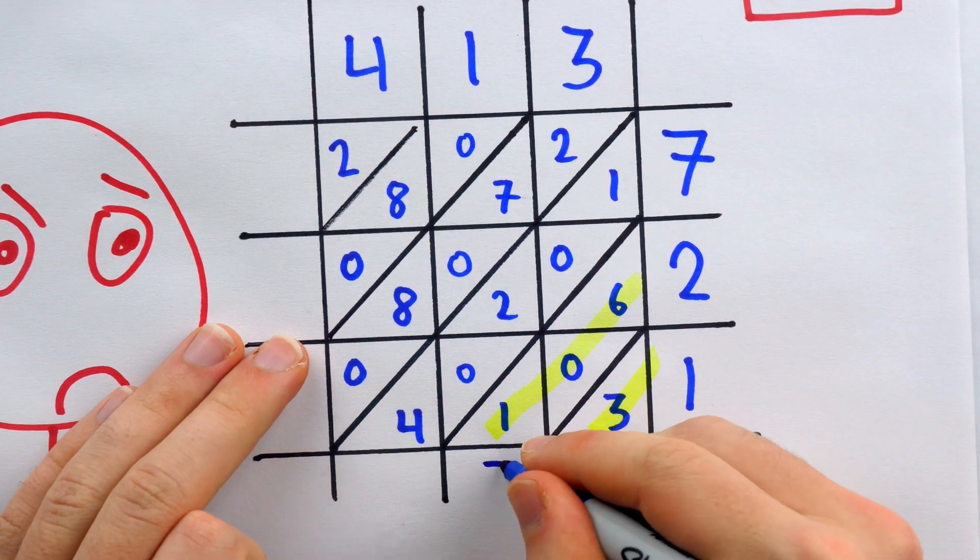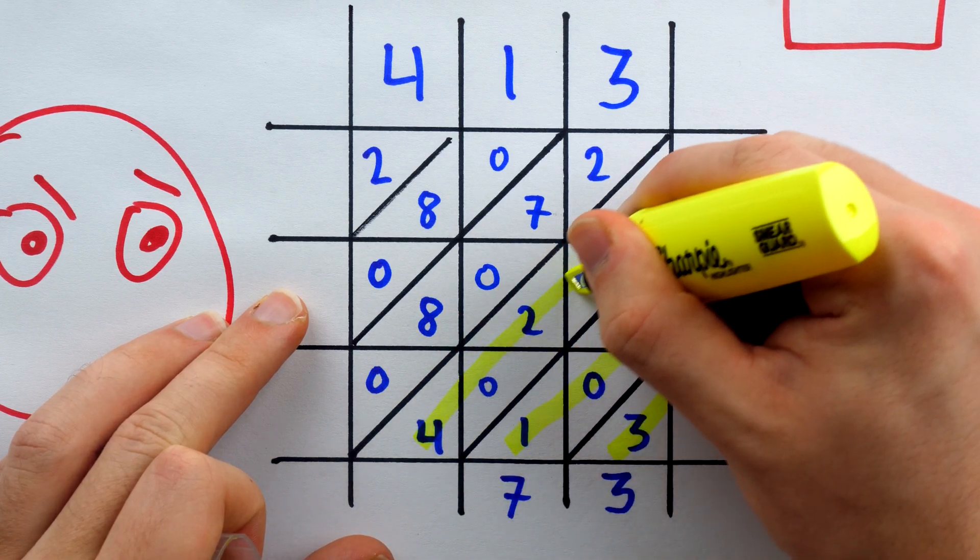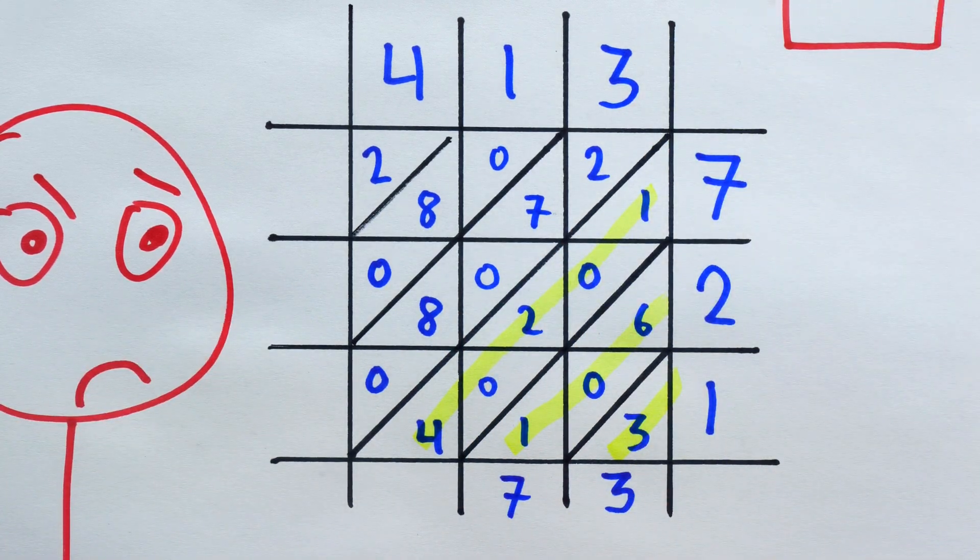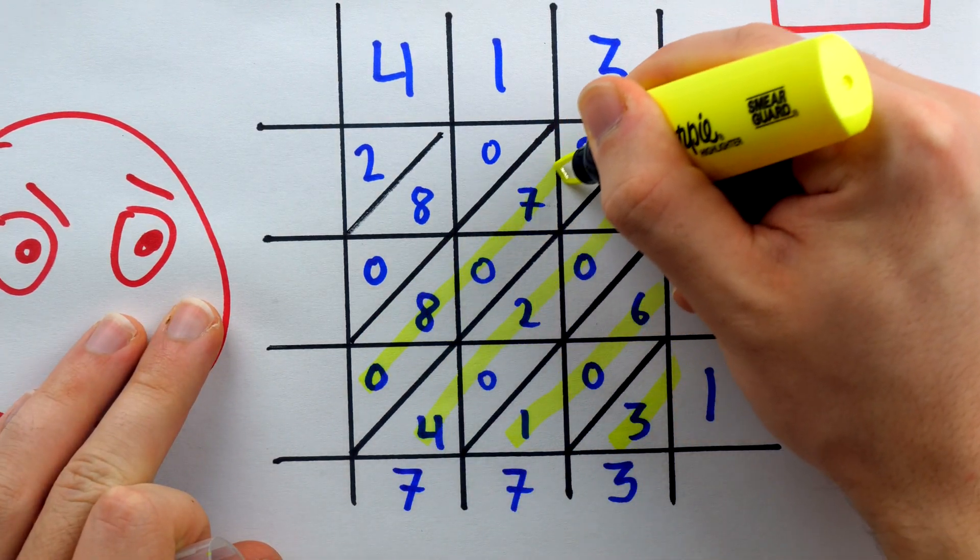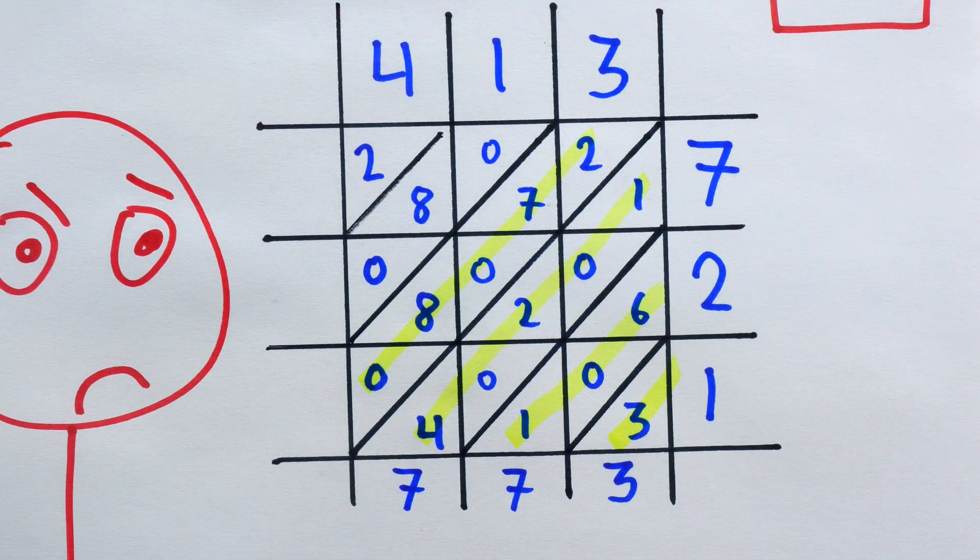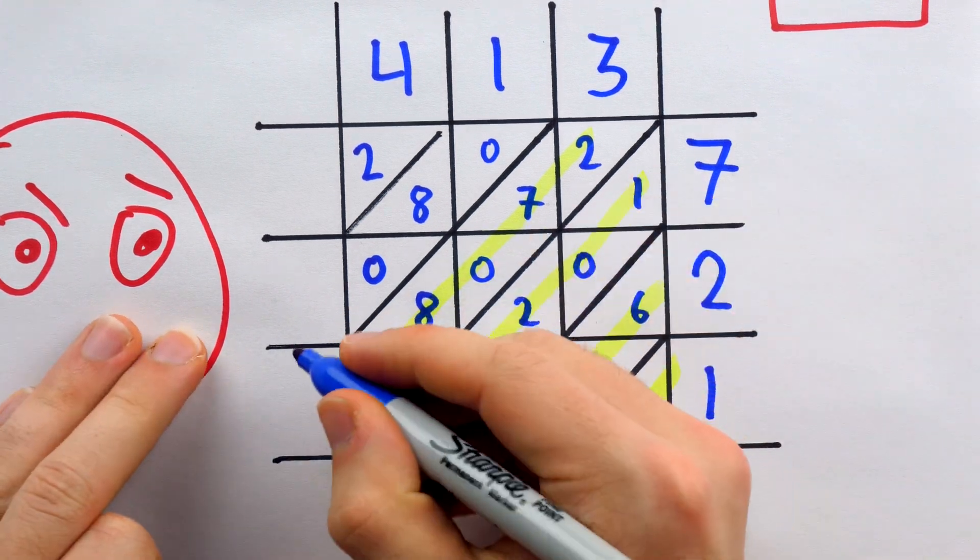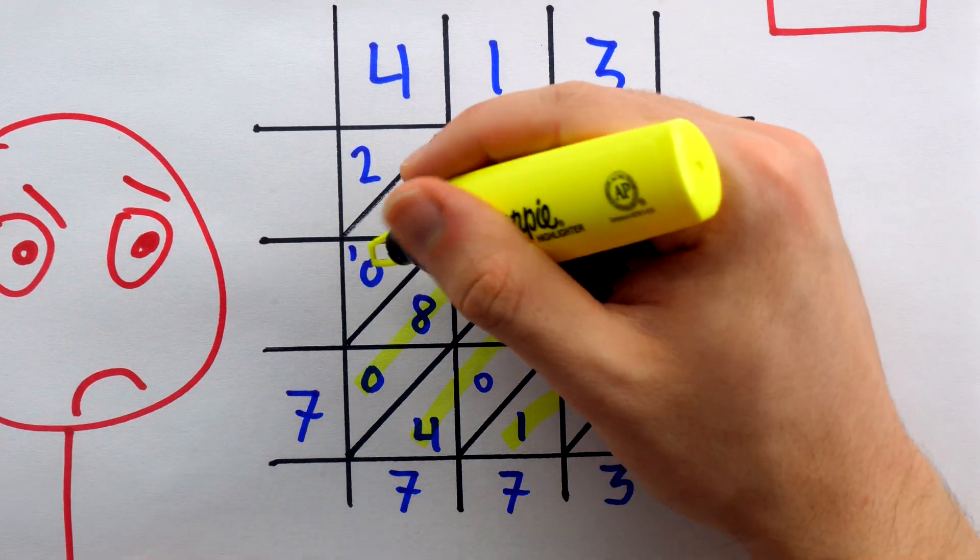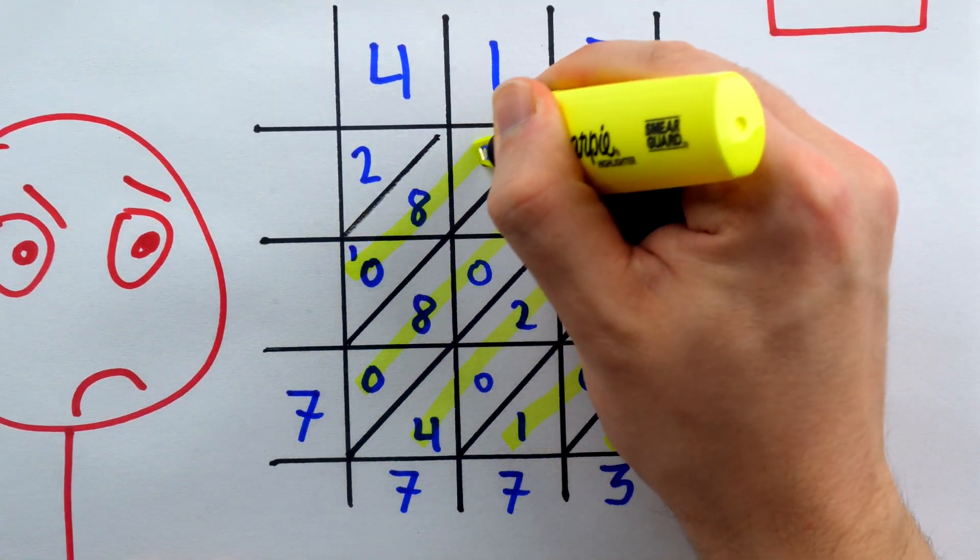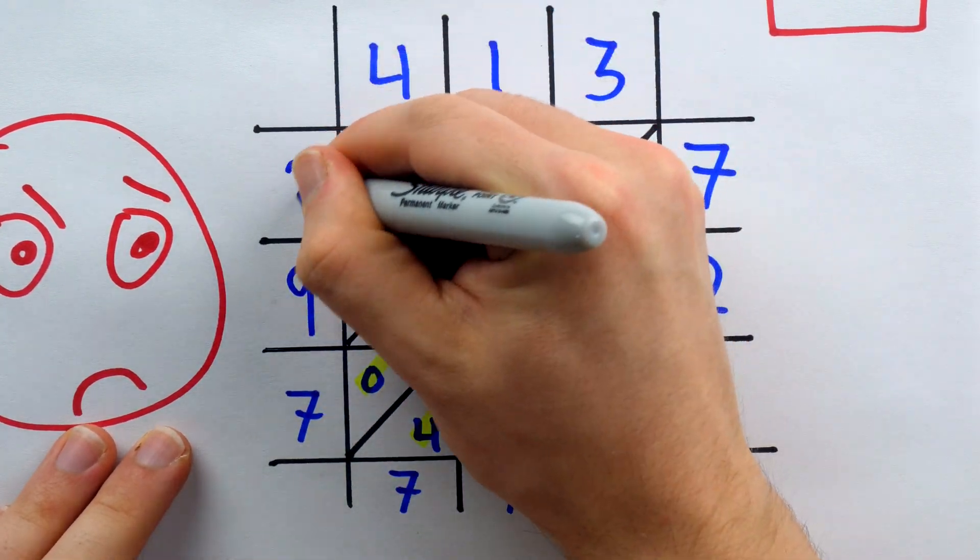The next diagonal slice is 4 plus 0 plus 2 plus 0 plus 1, so again, 7. Then we have 0 plus 8 plus 0 plus 7 plus 2, so that's going to be 17. So we'll put a 7 here and carry the 1. And then we have 1 plus 0 plus 8 plus 0, so that's going to be 9. And then finally, of course, we have 2.